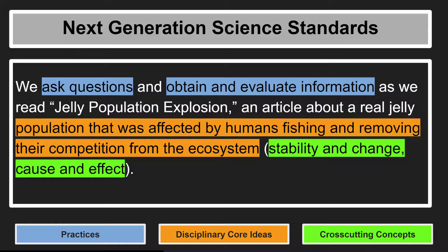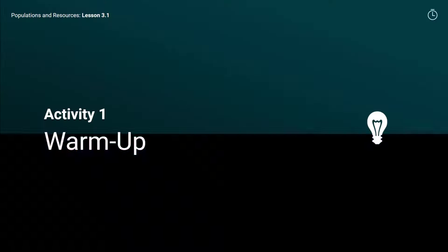In this lesson, we ask questions and obtain and evaluate information as we read Jelly Population Explosion, an article about a real jelly population that was affected by humans fishing and removing their competition from the ecosystem, showing stability and change and cause and effect.